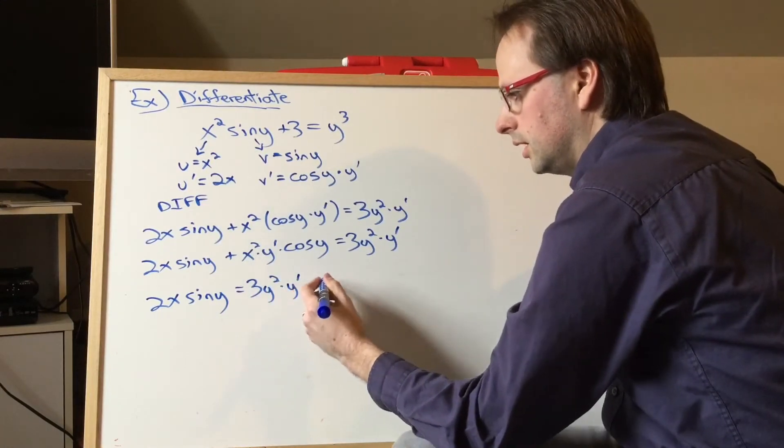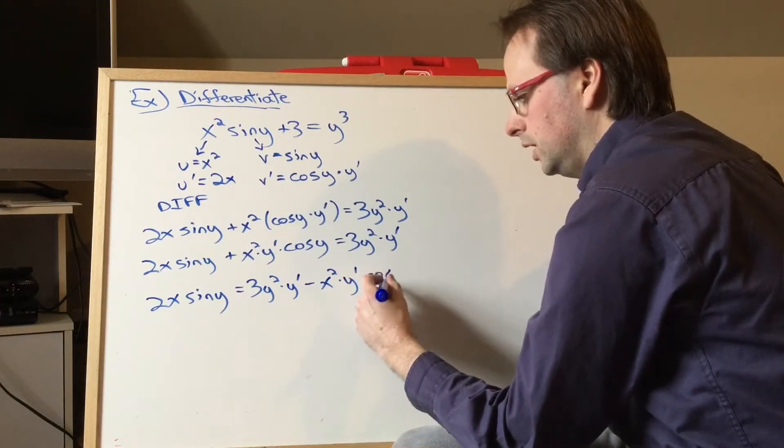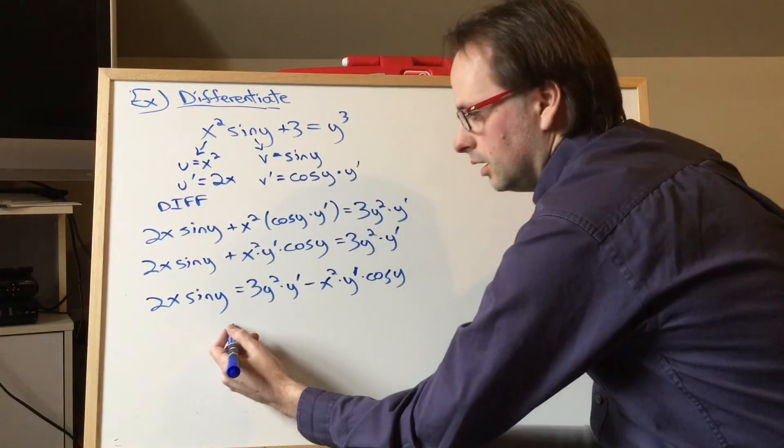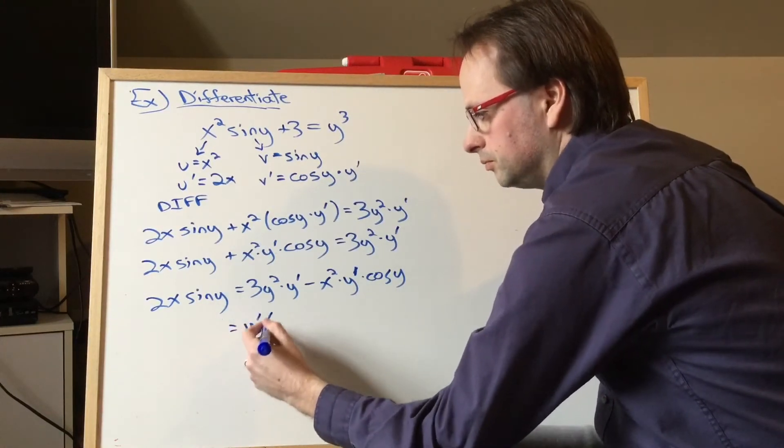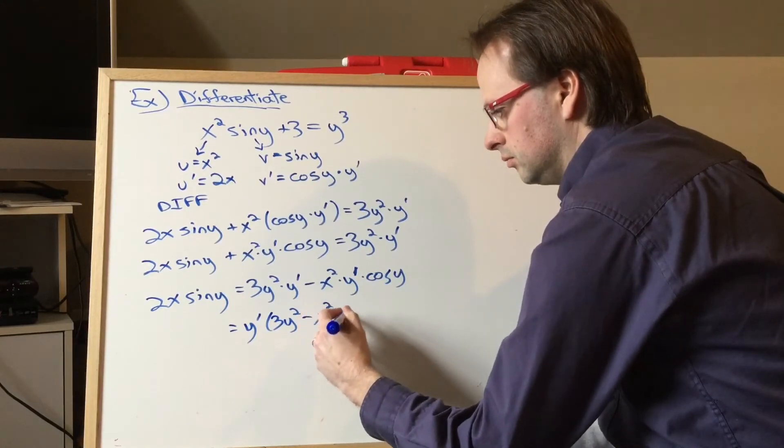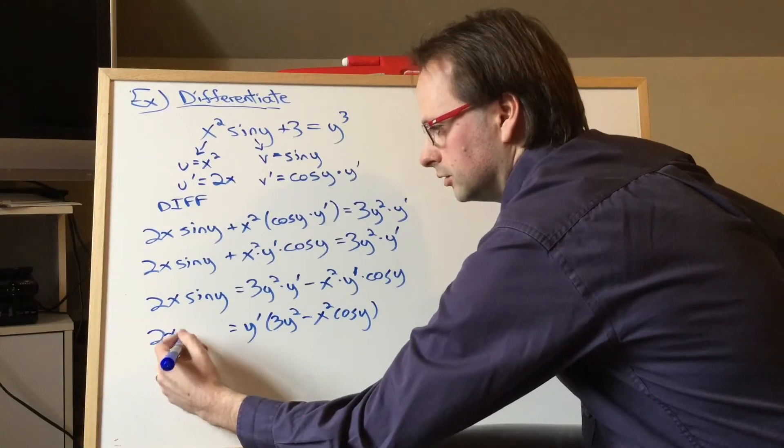Okay, and then I'll have negative x squared by y prime by cos y. That's a prime, not a power of 1. I'll factor out the y prime. Okay, and that's still equal to 2x sine y.